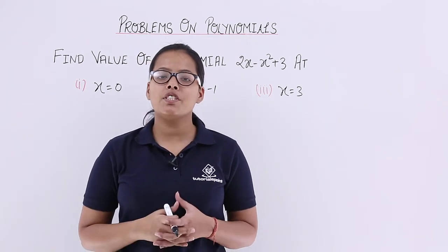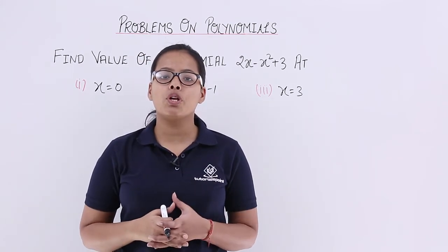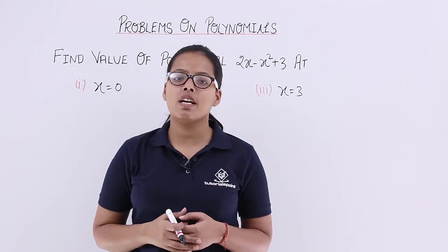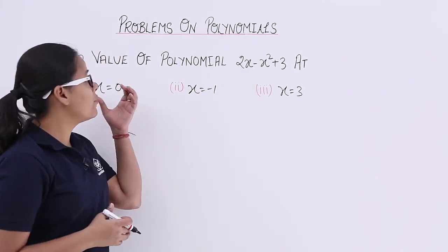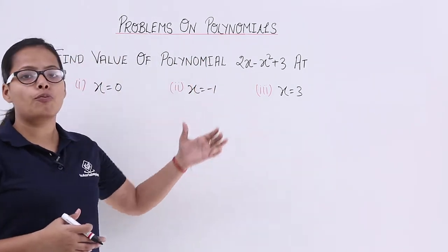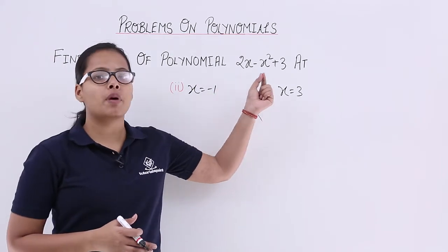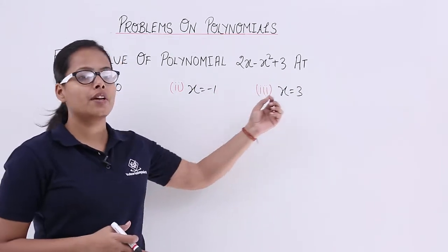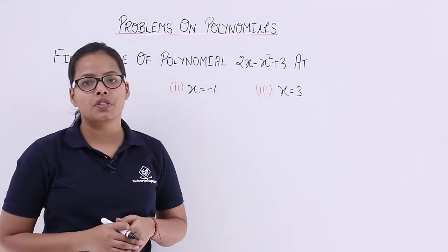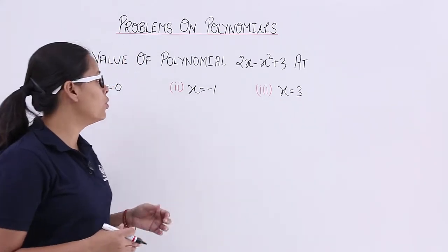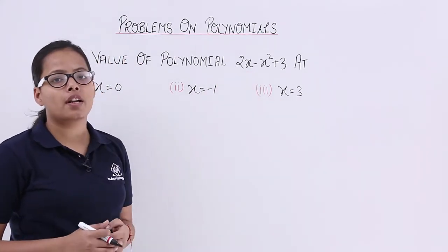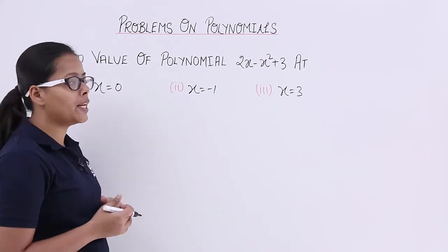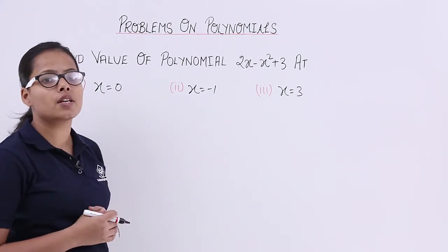Hello guys, today in this video I am going to take problems on polynomials. Let's discuss our first question which is: find the value of polynomial 2x - x² + 3 at three values. Let's explore the value for this quadratic equation at these three values. Our first value is x is equal to 0.